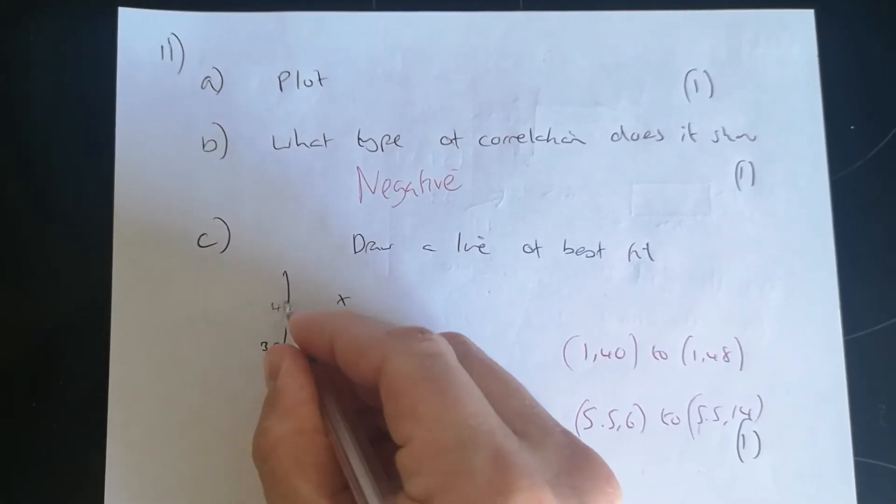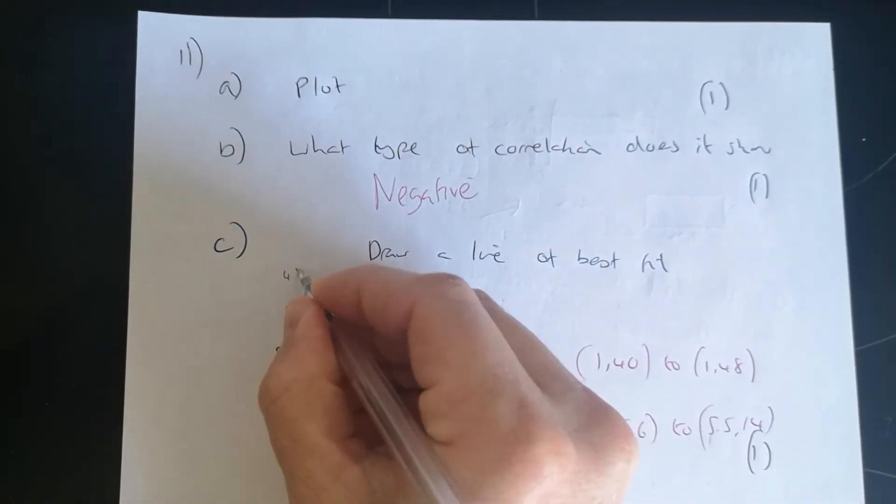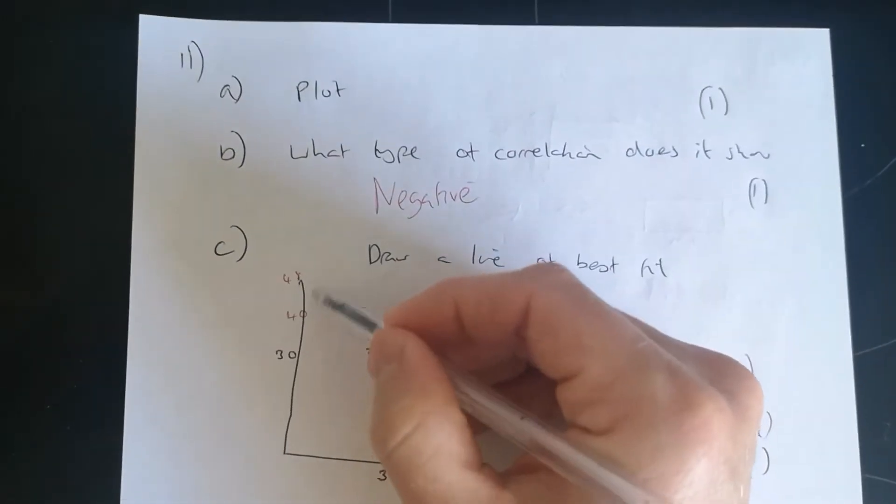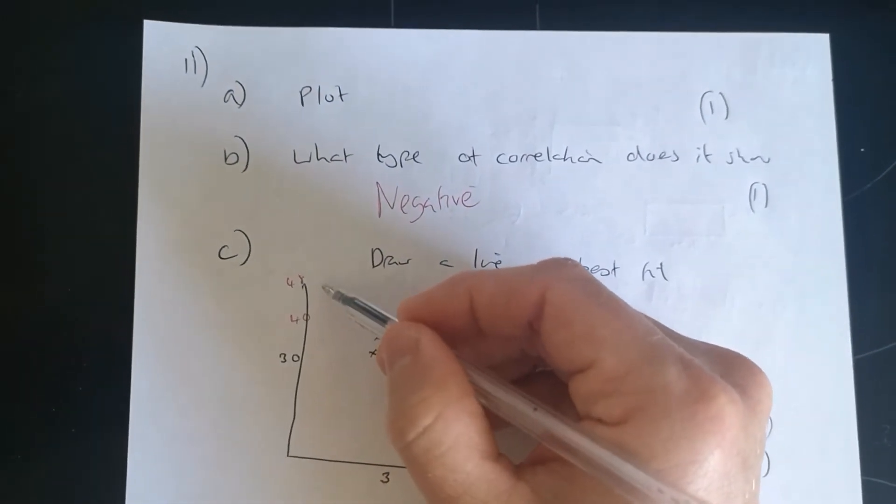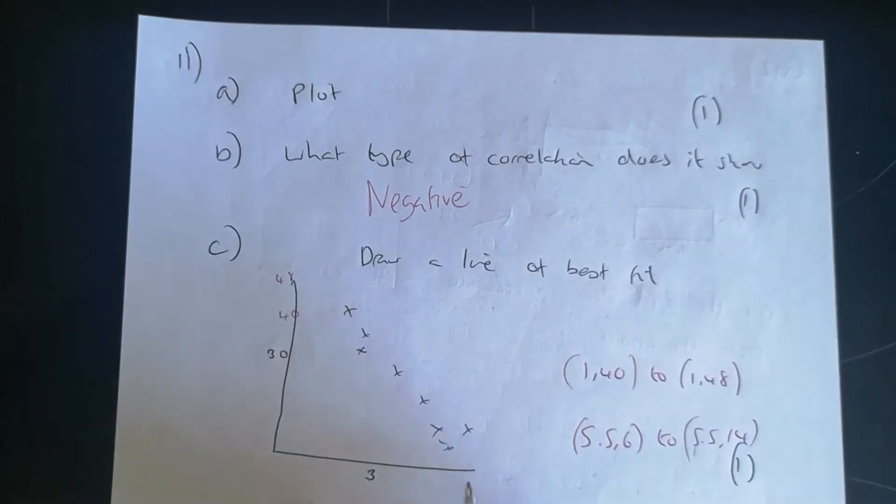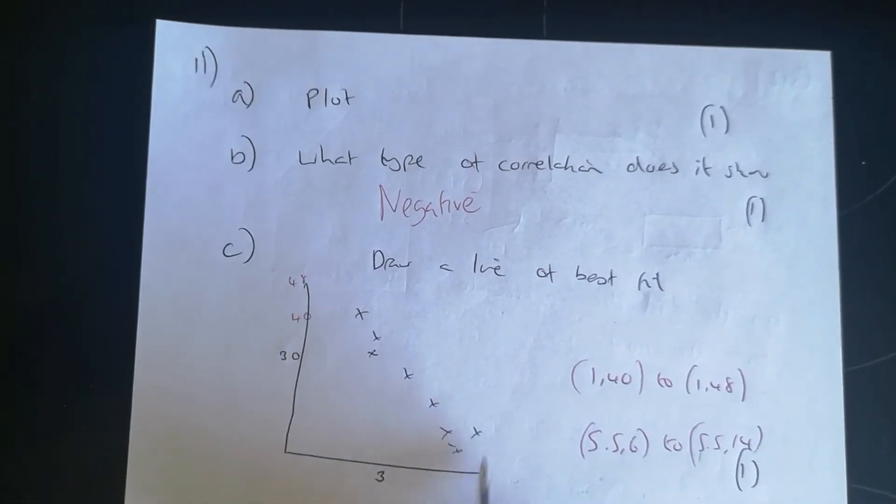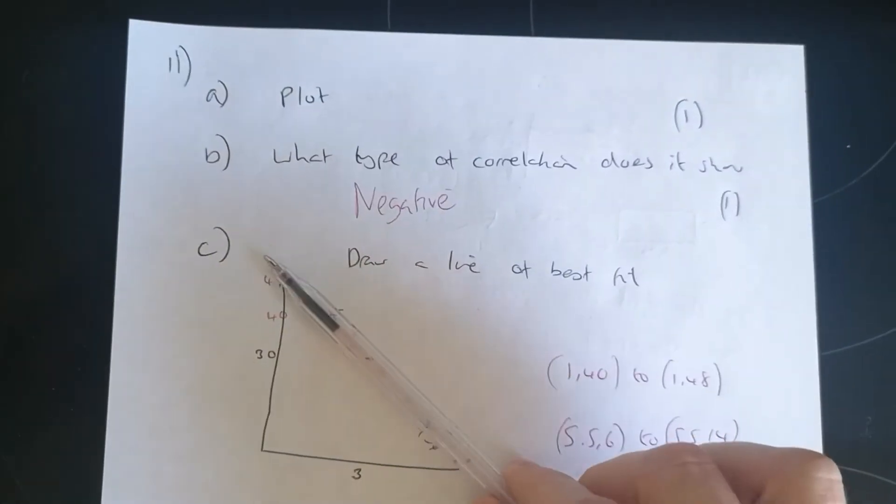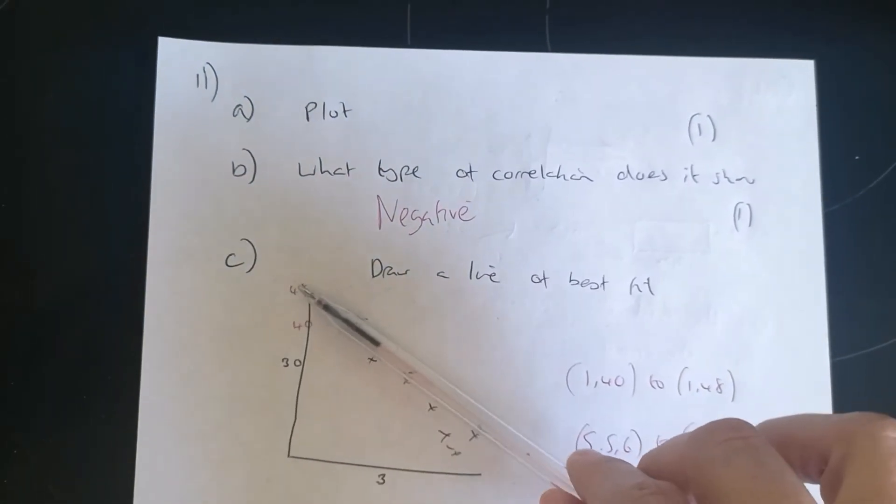So when you've got 40 and 48, as long as it sort of starts between those two points and then goes down to between 5.56, so think about where that point is, and 5.514, you've got quite a big variation of where that line could be.